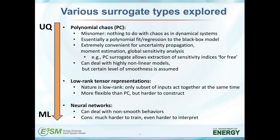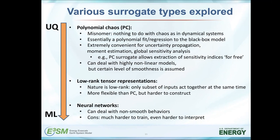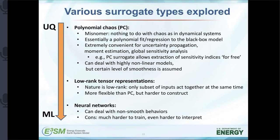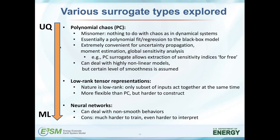A larger class of surrogates is a low-rank representation, which is a richer class. It's harder to construct, but nature is often low-rank — only a subset of inputs act together at the same time on a given quantity of interest. There is a lot of room to improve surrogate accuracy by employing low-rank tensor representations rather than plain polynomial fits. On the other end of the spectrum, neural networks are an even richer class of functions that can deal with really non-smooth behaviors. They can be very accurate when they work well, but they're much harder to train and even harder to interpret.